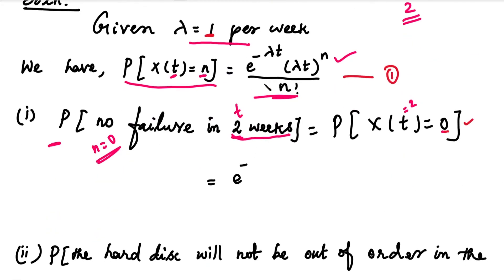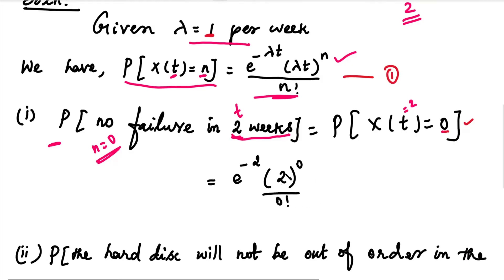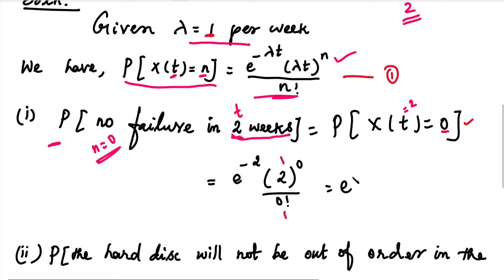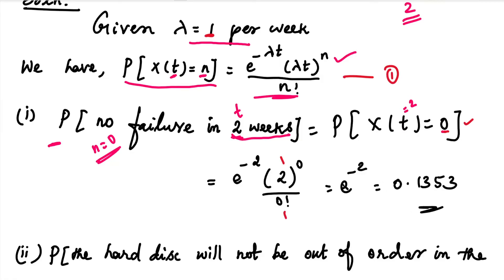The formula gives e to the power of minus lambda times t, which is e^(minus 1 times 2), multiplied by (lambda t)^n divided by n factorial. That is e^(-2) times (1×2)^0 divided by 0 factorial. Since 2^0 = 1 and 0! = 1, the answer is e^(-2) = 0.1353. This is the answer to the first part.